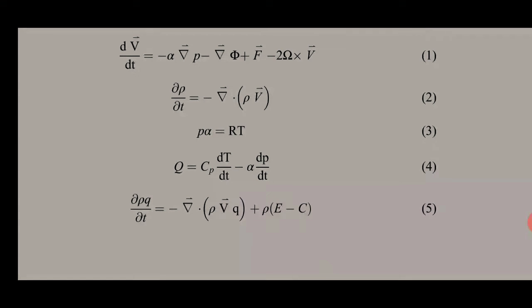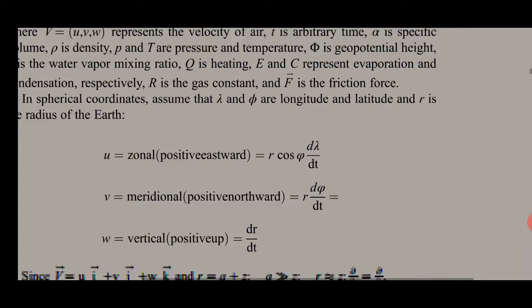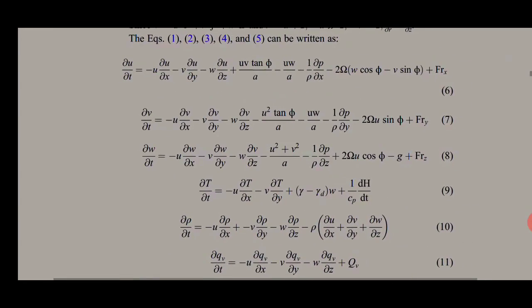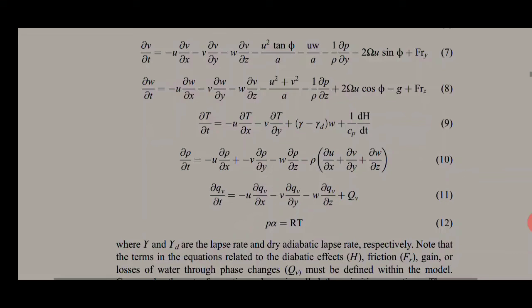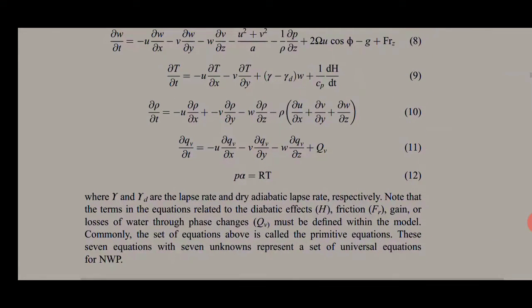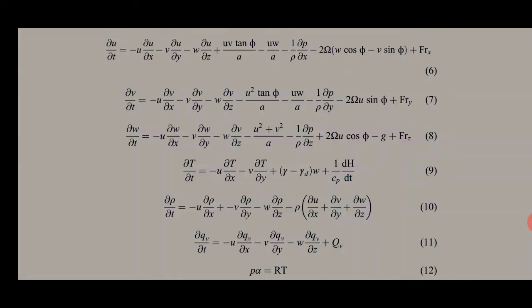When we convert these equations into X, Y, and Z components in spherical polar coordinates, we get equations 6, 7, and 8, which are the three components of the momentum equation. Equation 9 is the continuity equation, or conservation of mass. The water vapor variable QV must be defined within the model through phase changes. This set of equations is commonly called the primitive equations — seven equations with seven unknowns representing a universal state for NWP.